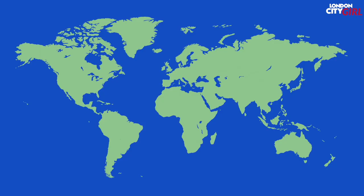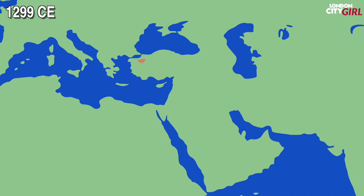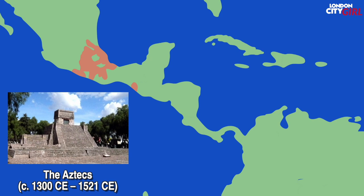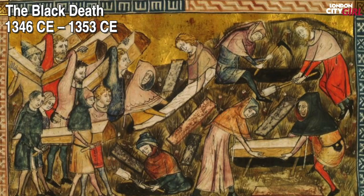From 1299 CE the Ottoman Turks established the Ottoman Empire. After 1354 CE the Ottomans crossed into Europe and after they conquered the Balkans the Ottoman Empire became a transcontinental empire. From 1300 CE the Aztecs and Mesoamerican culture flourished in what is now central Mexico. Between 1346 CE to 1353 CE the world was visited by one of the deadliest pandemics in human history, the Black Death. The disease resulted in a massive loss of life killing up to an estimated 75 to 200 million people globally.